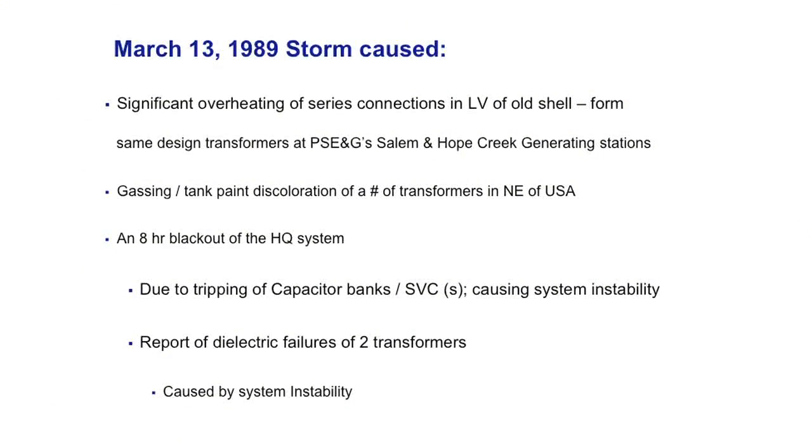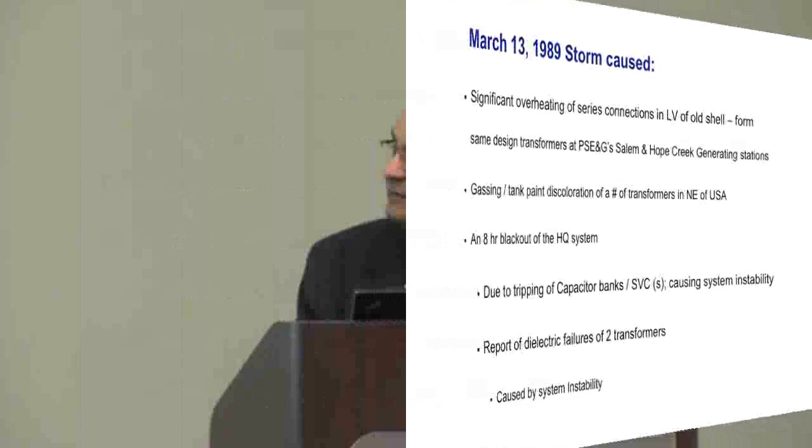There was also gassing and tank paint heating on some transformers in the northeast United States — Allegheny Power, the Washington D.C. area, Baltimore. The most significant effect was that the Hydro-Quebec system had an eight-hour blackout that day, occurring exactly one and a half minutes after the storm event. A lot of SVCs, relays, and capacitor banks tripped, and one thing led to another, causing the whole system to collapse within one and a half minutes. There is also a report that two transformers failed dielectrically afterward, not because of overheating.